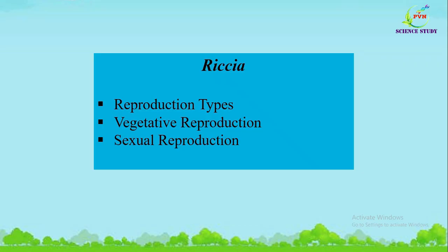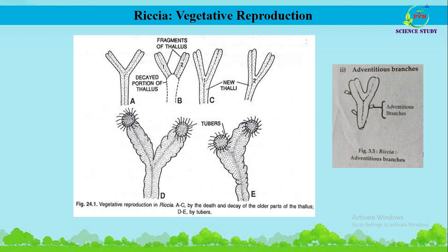Welcome to PVN Science Study. This is the second part of the Riccia video. In this video we will study two types of reproduction in Riccia: vegetative reproduction and sexual reproduction. Vegetative reproduction in Riccia takes place by four methods: fragmentation, formation of adventitious branches, tubers, and persistent apices.